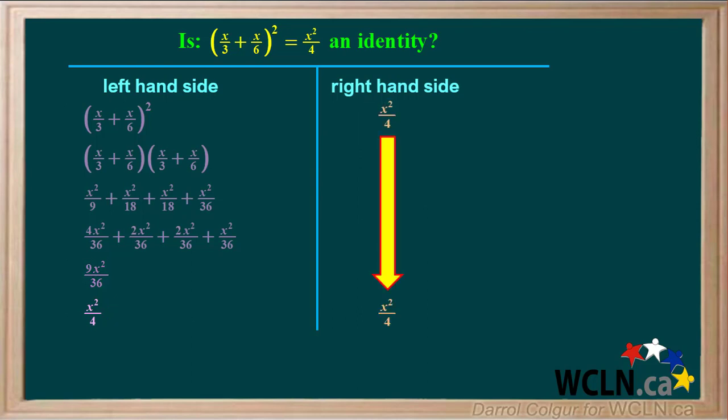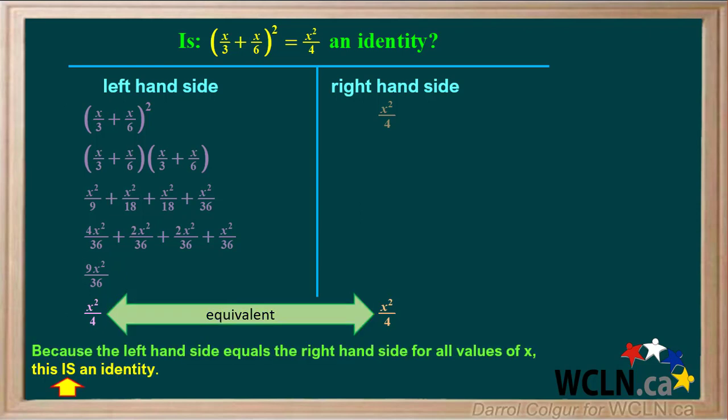On the right side, we'll rewrite the original expression x²/4 on the bottom line. We see that the expression on the left is now equivalent to the expression on the right. Because the left hand side equals the right hand side for all values of x, this proves that the original equation is an identity. The same general process that we introduced here can be used to prove trig identities.